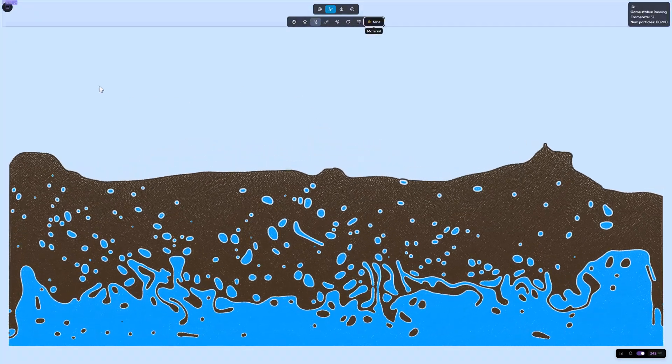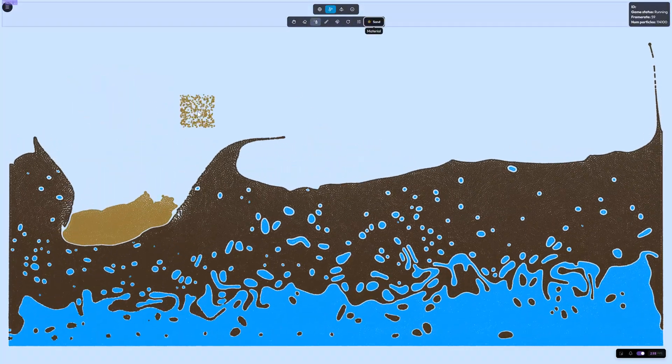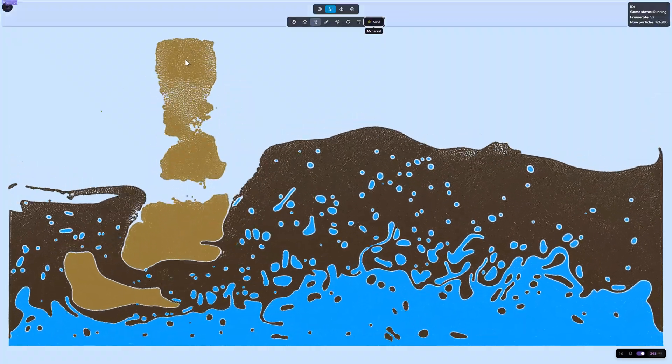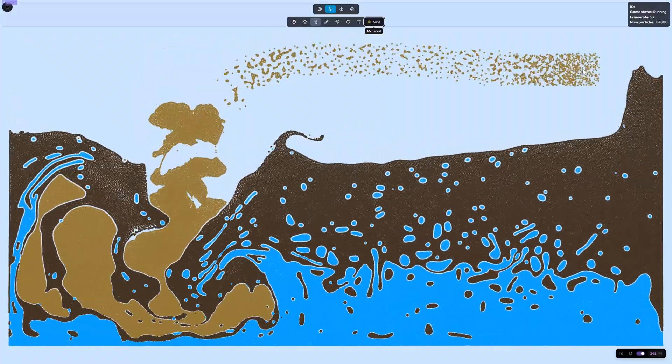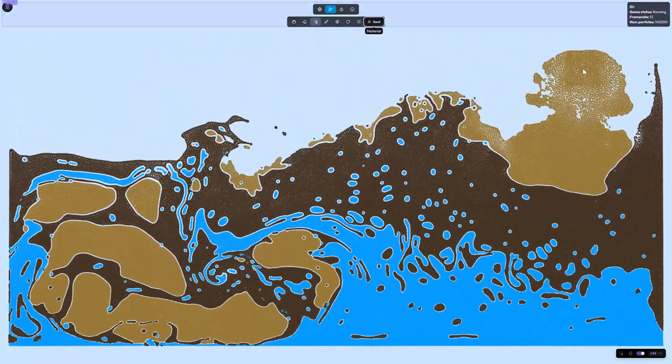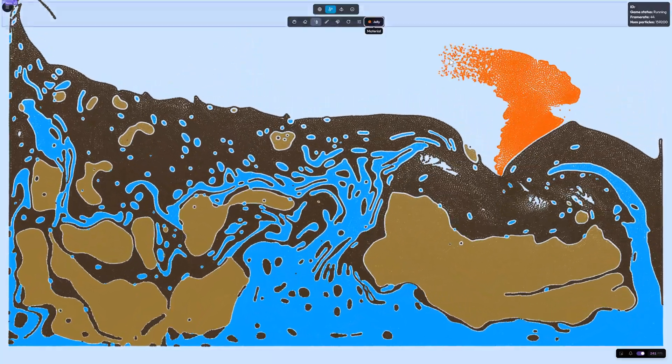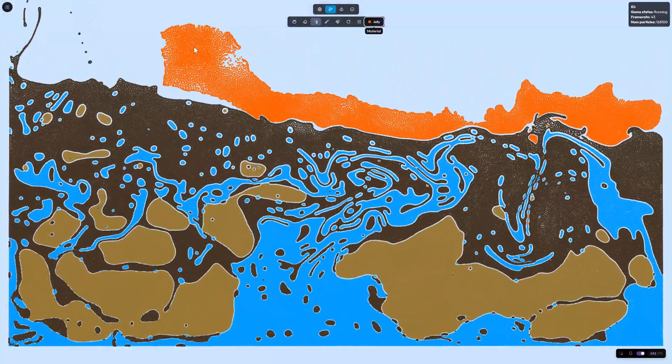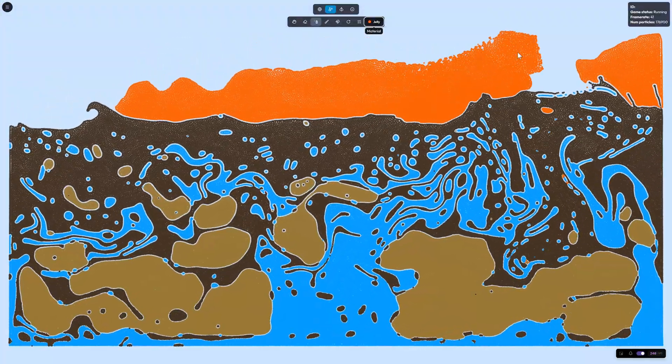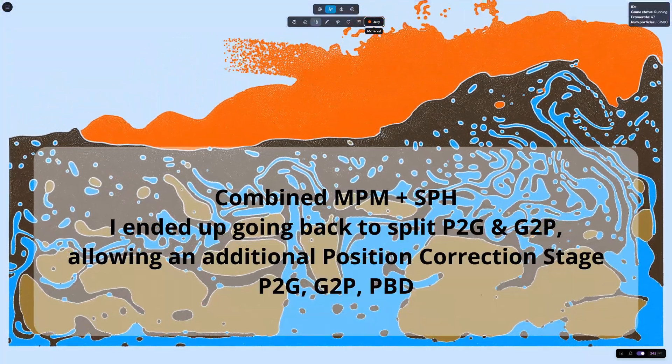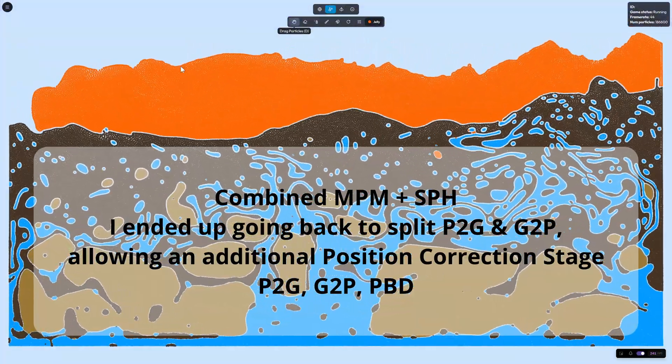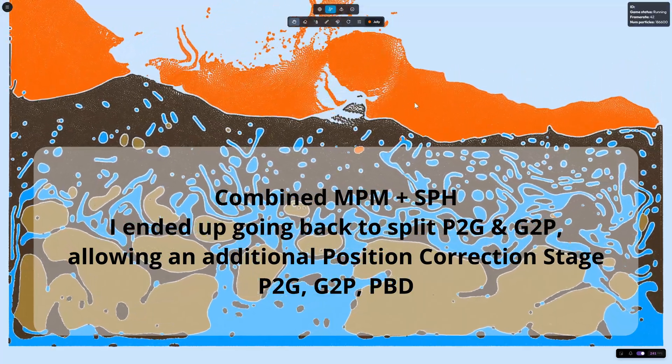And I have also been working on adding a new viscoelastic material. So one cool thing about the new simulator is that it kind of combines aspects of SPH and MPM. It uses MPM for integrating the stress tensors and whatnot to do elastic materials,